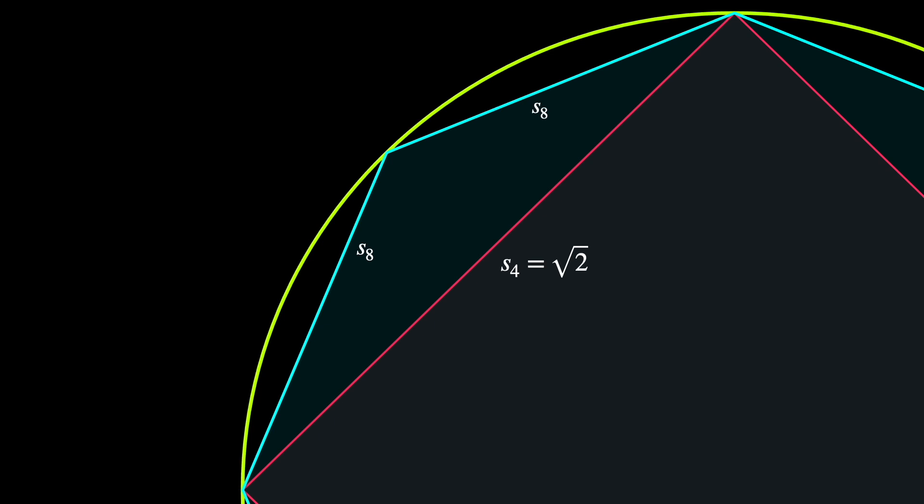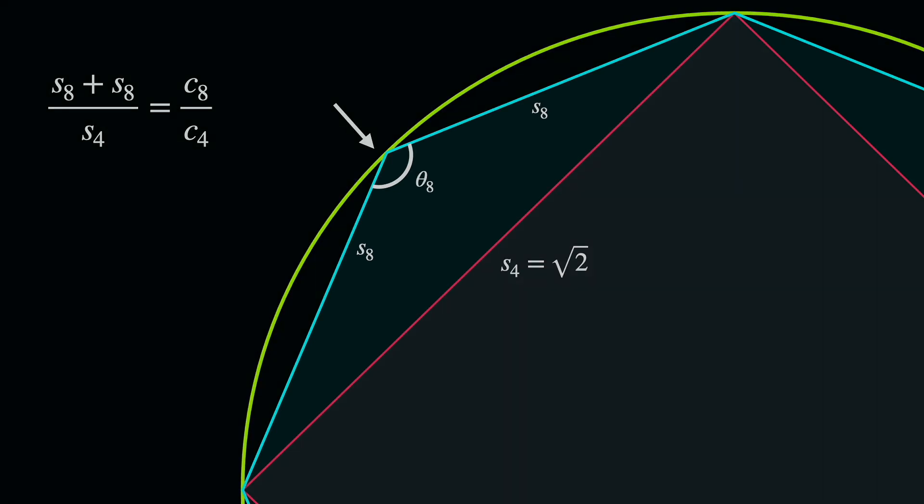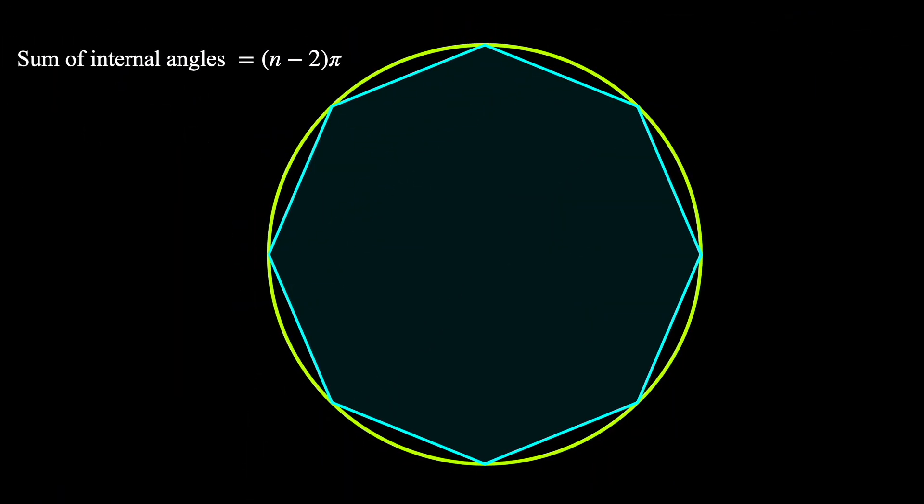Due to both the square and octagon are regular, it is sufficient to consider only the ratio of this sector, which will also be the same as the ratio of the parameters. If we can figure out this angle, then we can easily apply the cosine rule to move on. This angle is actually one of the internal angles of a regular octagon, so it is actually known.